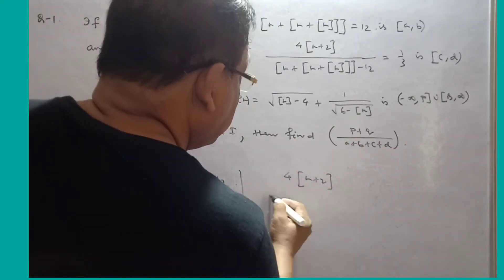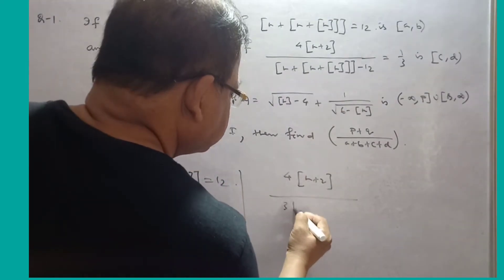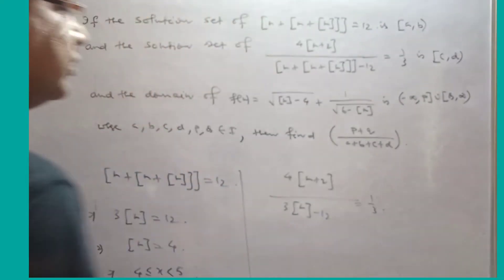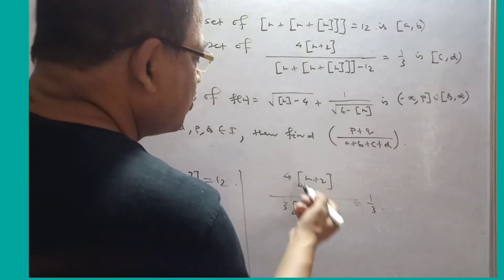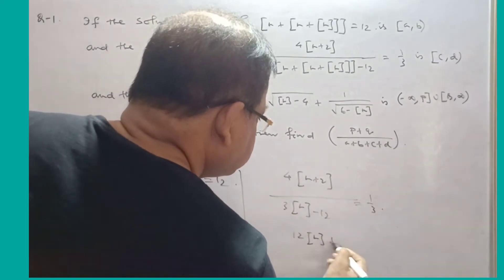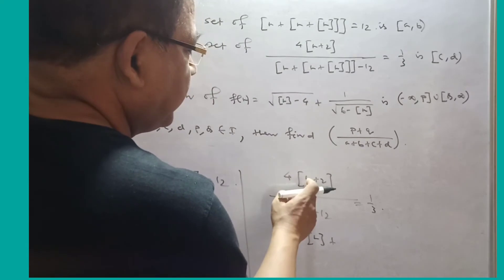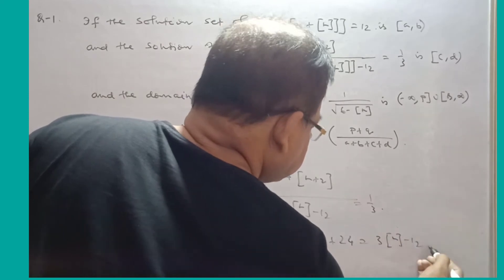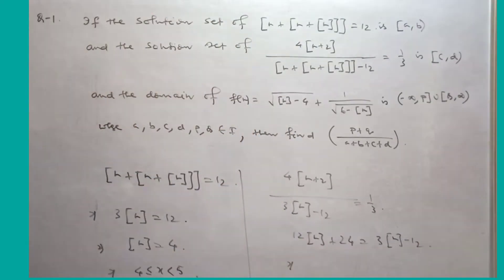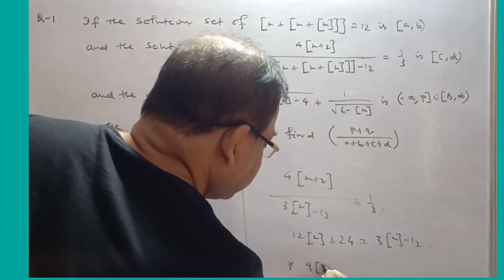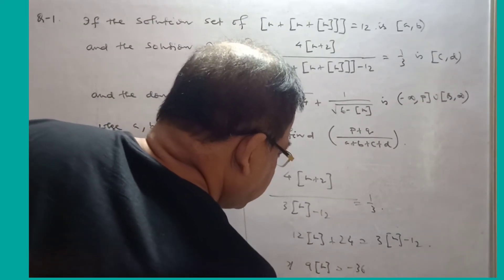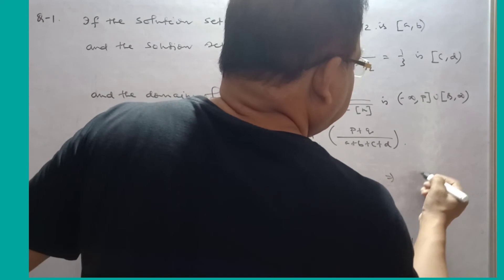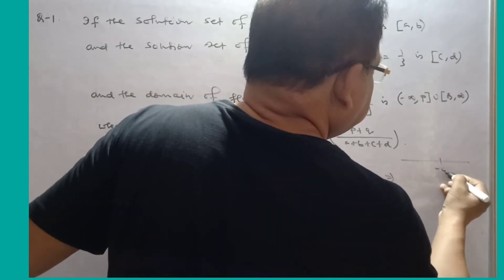So the expression is 4(X + 2) and 3X — giving greatest integer of X − 12 = 1/3. Multiplying by 3: 4X + 24 − 12 = 9X, so 9 times X equals −36, giving greatest integer of X = −4.